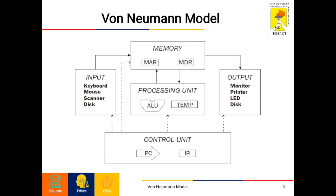The central processing unit is defined as the electric circuit used for the execution of instructions of a computer program. It has the following major components: the control unit (CU), the arithmetic logic unit (ALU), and a variety of registers.